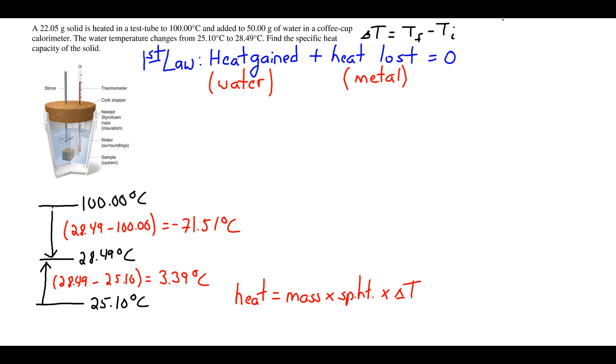We've indicated our temperature changes here. Our water increases in temperature, our hot metal decreases in temperature. Remembering that Delta T is Tf minus Ti, that leaves us with a positive temperature change for the water and a negative temperature change for the metal.